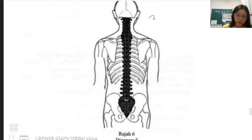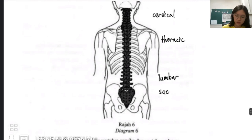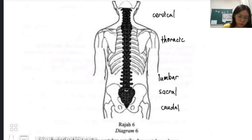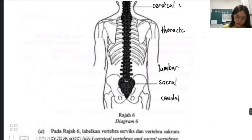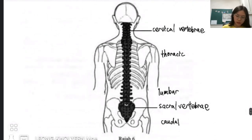We have cervical vertebrae at the top, followed by thoracic, then lumbar, then sacral, and last is the caudal. The cervical is in the upper region and the sacral is just before the caudal triangular part. Remember to write the full name — sacral vertebrae — when labelling. You only need to label these two, but it's good to recap all the vertebrae types.